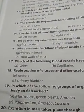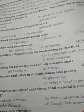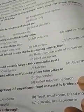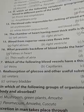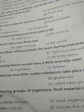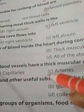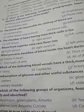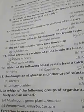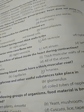Question number 17: which of the following blood vessels have a thick muscular coat? Arteries have a thick muscular coat because of the high blood pressure they carry. Arteries are supported with a thick muscular coat due to the high blood pressure. The answer is C.